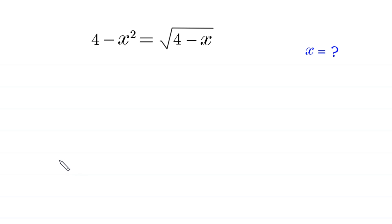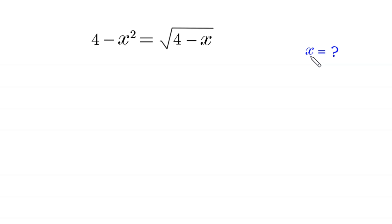Hello everyone, you are welcome to how to solve this very nice radical equation. 4 minus x squared is equal to square root of 4 minus x. We need to find all possible values of x.